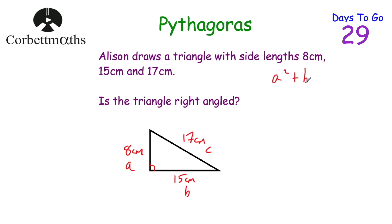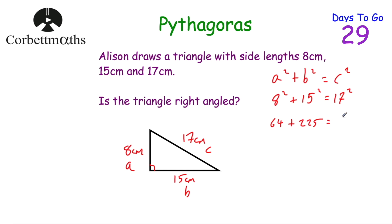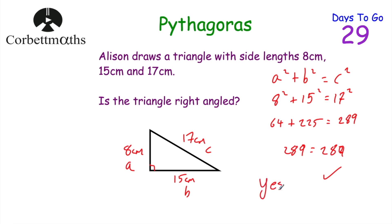Pythagoras's theorem: A squared plus B squared equals C squared. So 8 squared plus 15 squared equals 17 squared. 8 squared is 64, 15 squared is 225, and 17 squared is 289. Now the key bit: if 64 plus 225 equals 289, then Pythagoras's theorem is satisfied. 64 plus 225 is indeed 289, so we get 289 equals 289. Pythagoras's theorem works, which means yes, the triangle is right-angled.